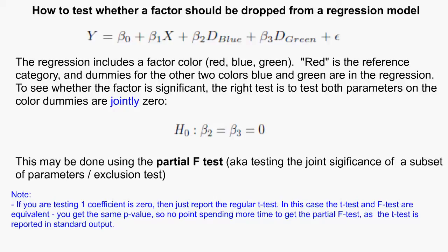You can see from the model I have dummies for blue and green. If I want to test whether the factor color is significant, I need to test that both parameters on the dummies are zero. I can do this with the partial F-test.